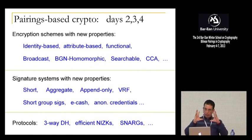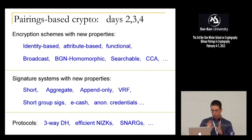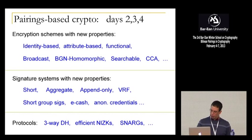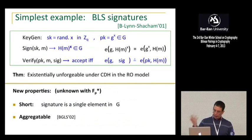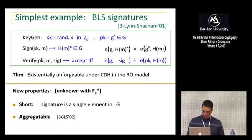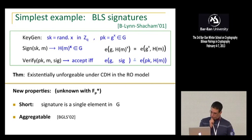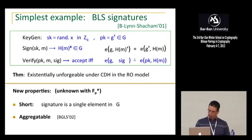I just wanted to give you the simplest example application for pairings, just so that you're prepared for what's coming in the next couple of days. So let's look at one example application of pairings to crypto, just to show the power of pairings. The simplest example I know of is what's called the BLS signature. It's due to myself with Ben Lynn and Hovav Shacham. Let me describe how the signature works.